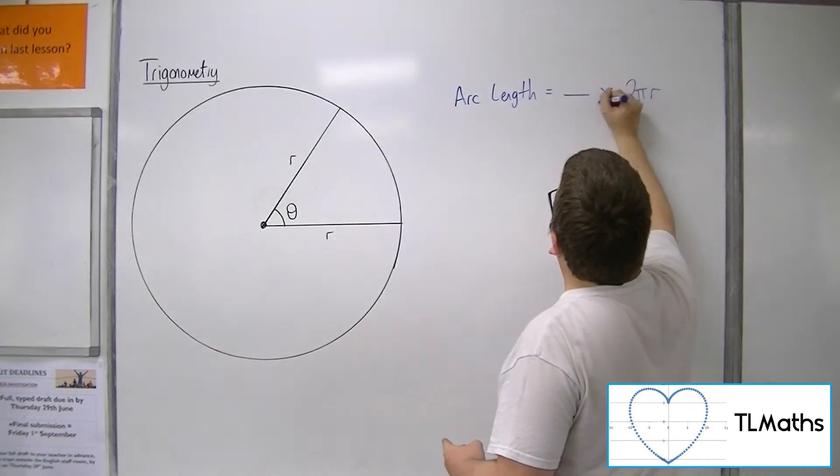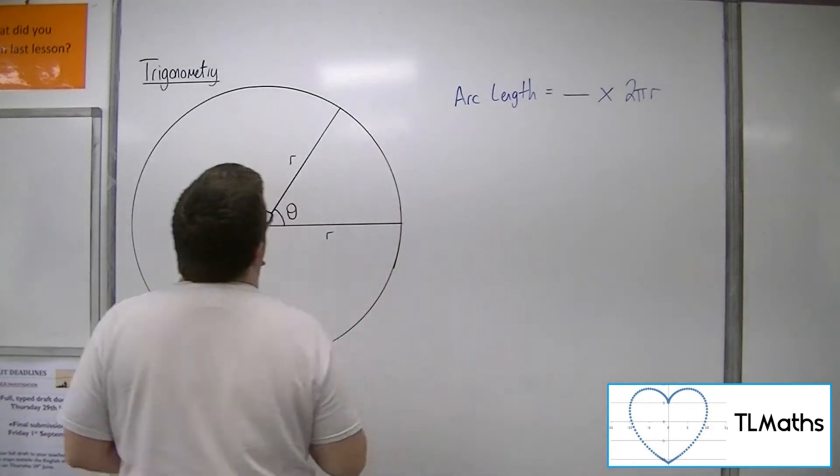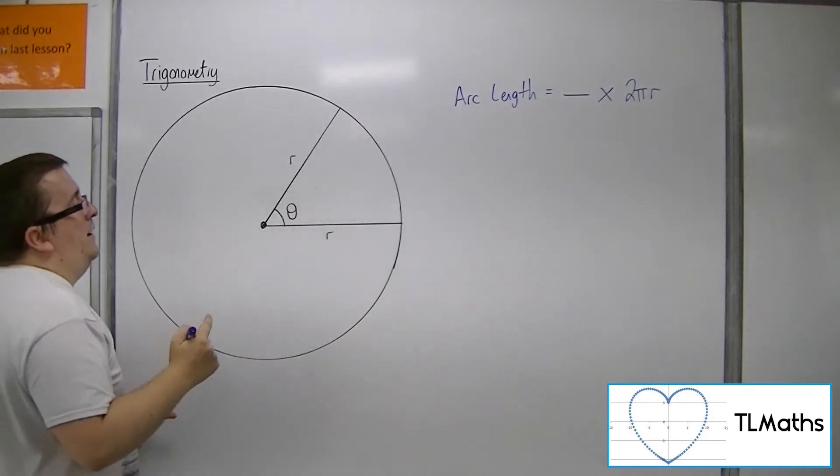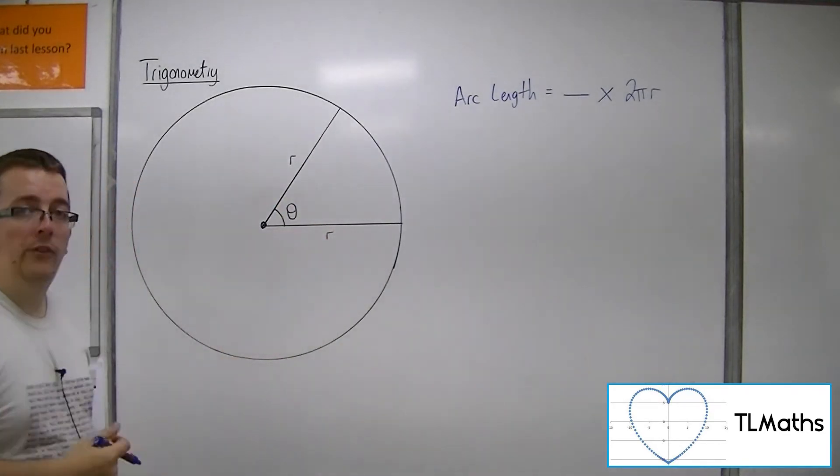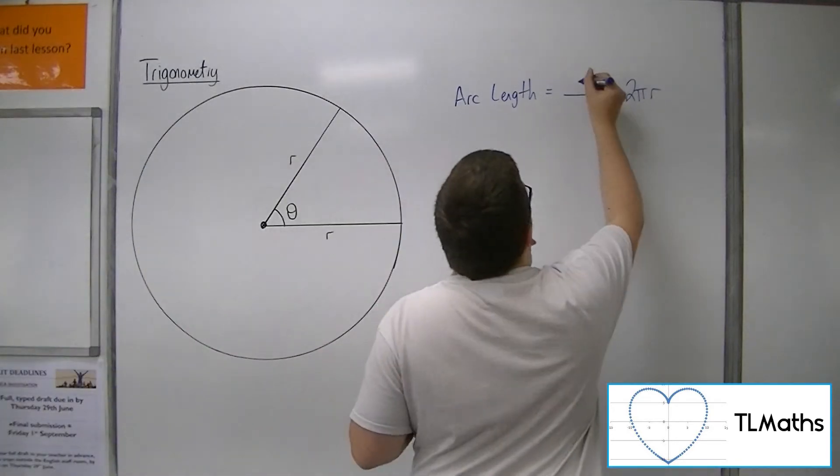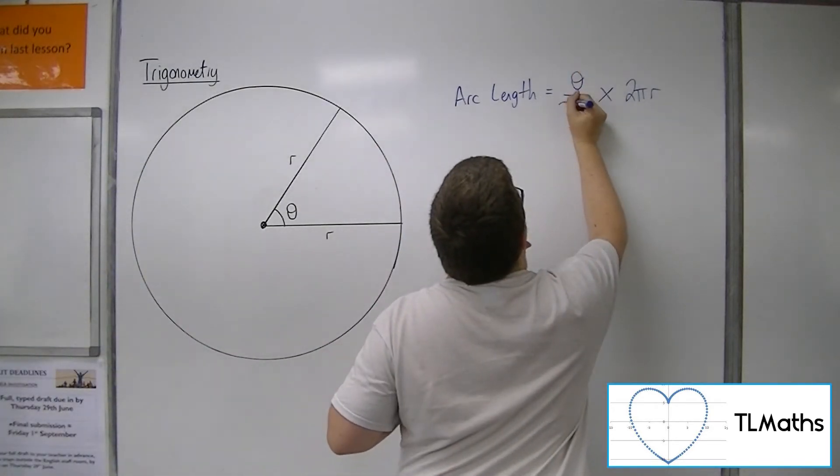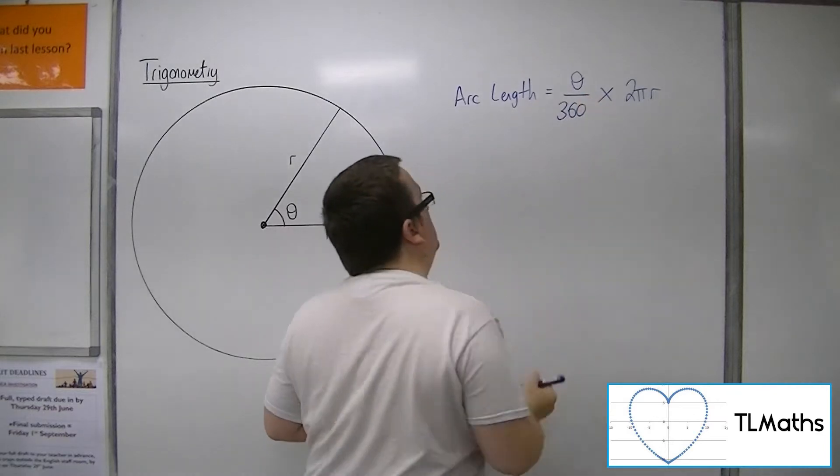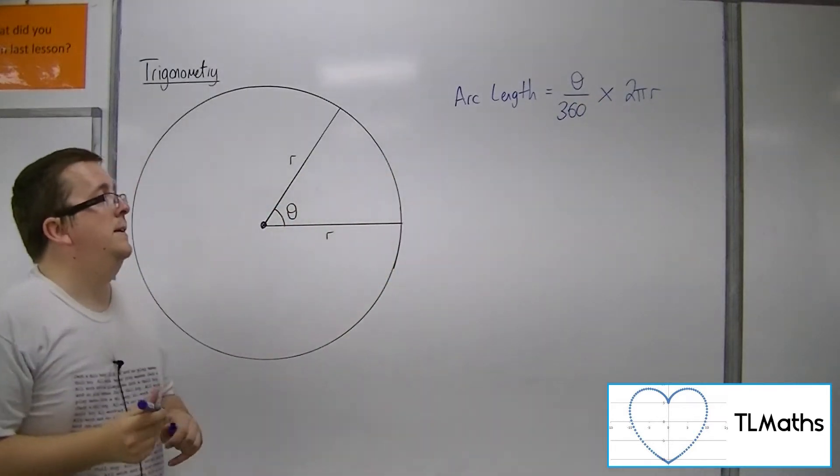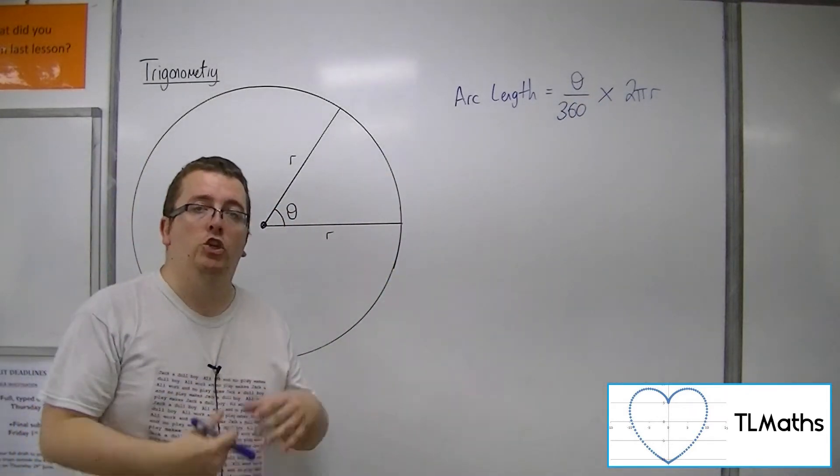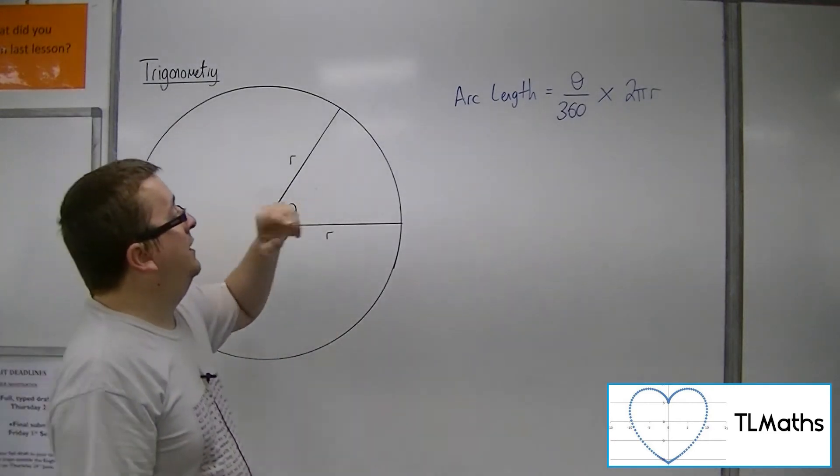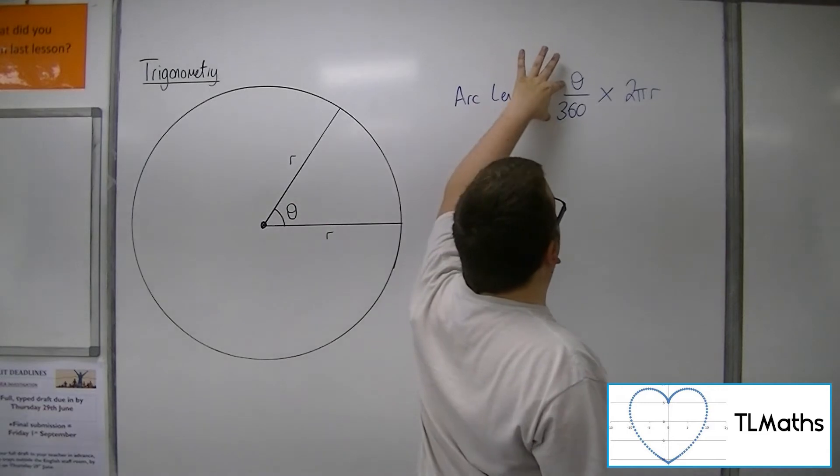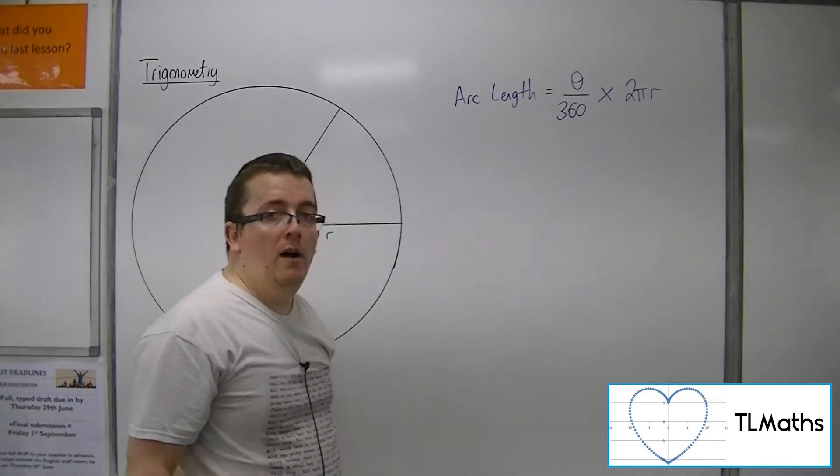So I want some fraction of that 2πr. And I could work it out by saying, if I know that the angle is theta, then whatever that angle is out of 360, I could multiply by 2πr. And that will give me the fraction of the circumference I want. So if that's 60 degrees, then I could say I want 60 out of the 360 of the 2πr.